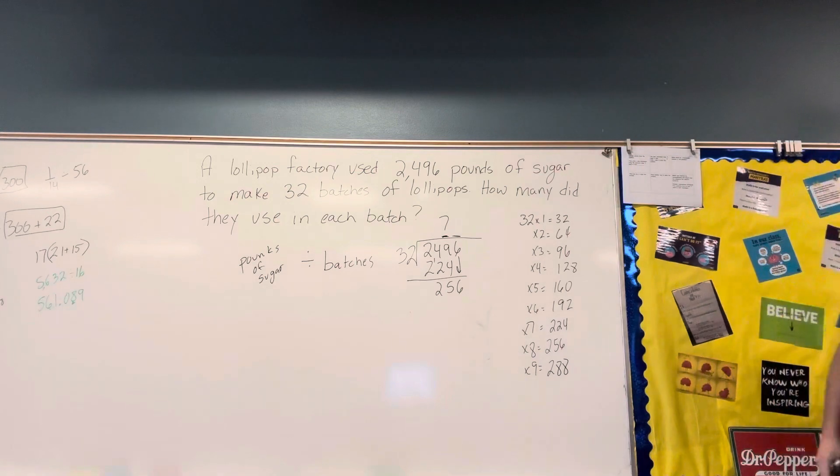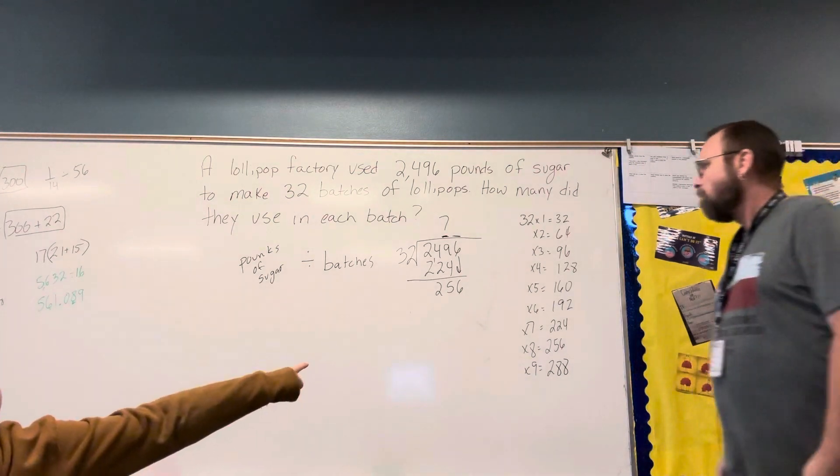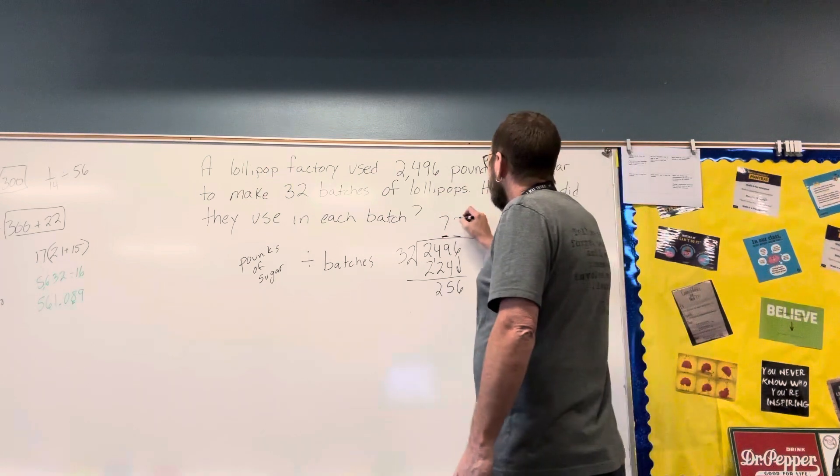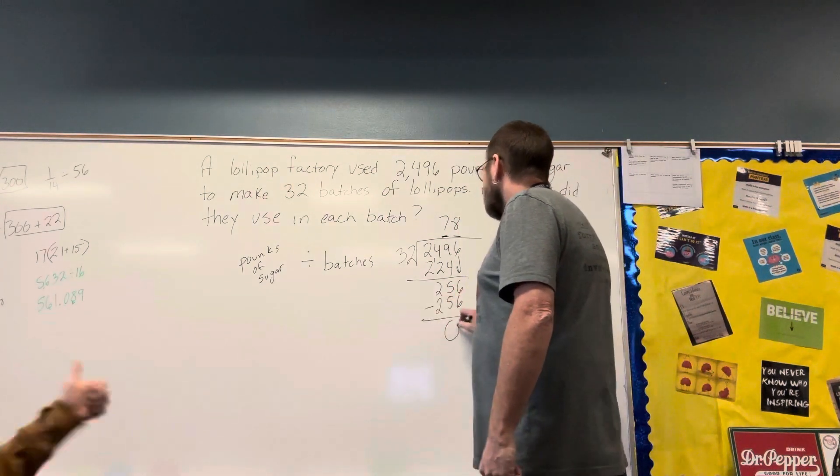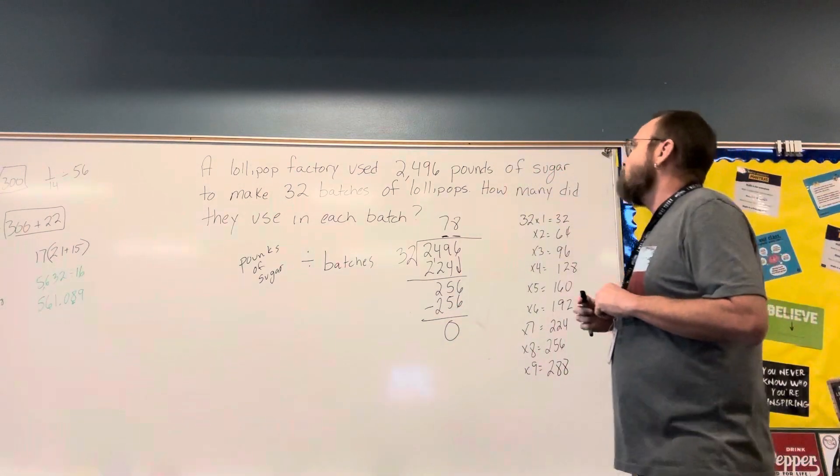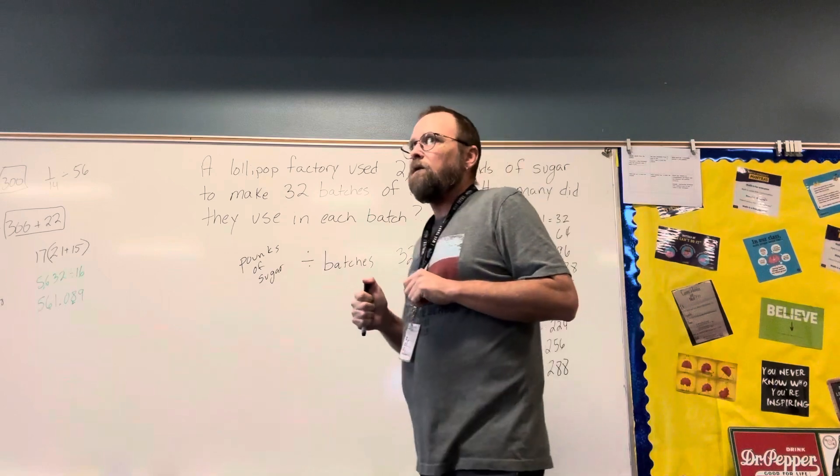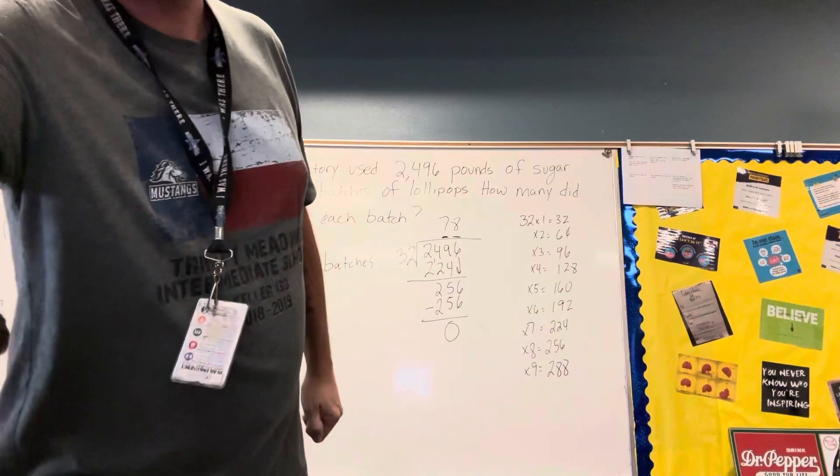Now Ethan, how many times does 32 go into 256? Eight. Eight times, and that is exactly 256. Yes. So they used 78 pounds in each batch, 78 pounds in each batch.